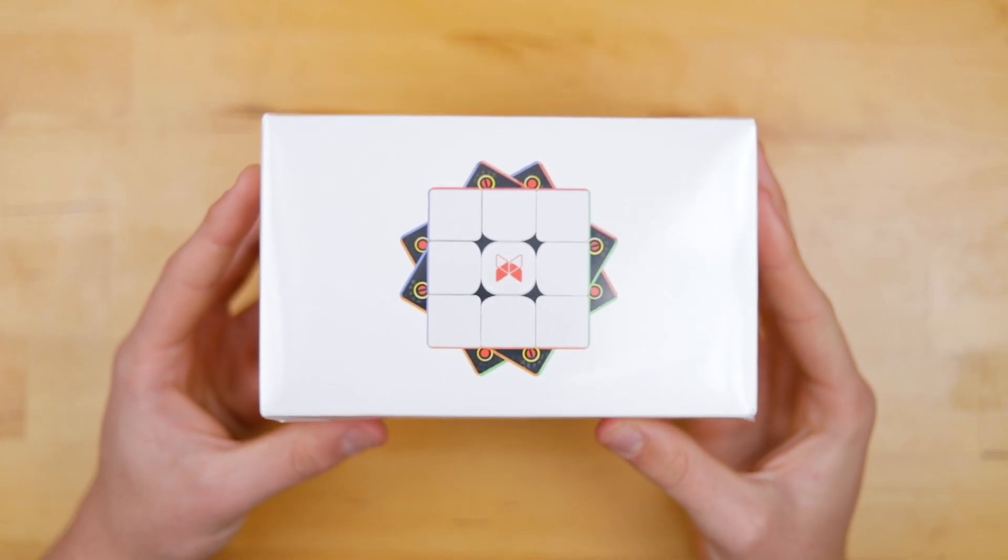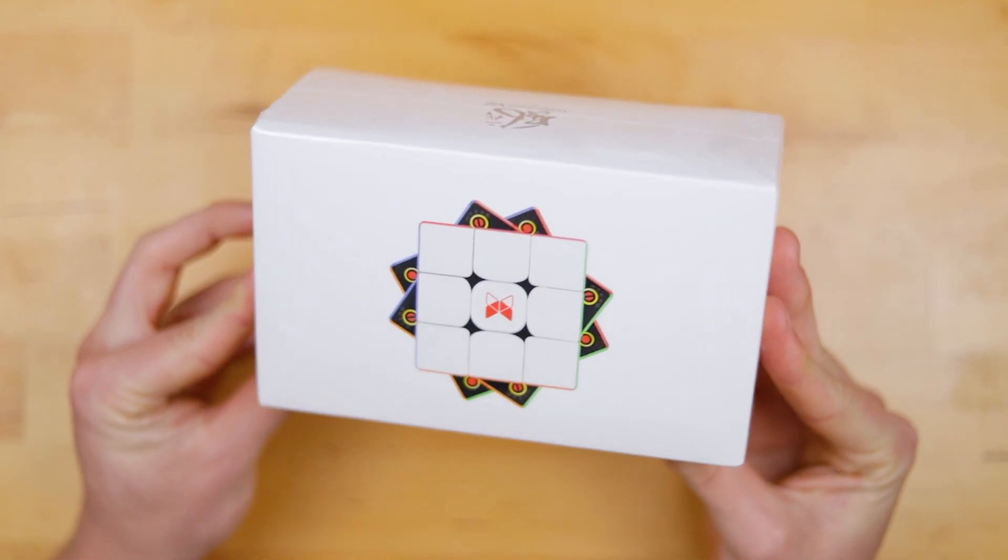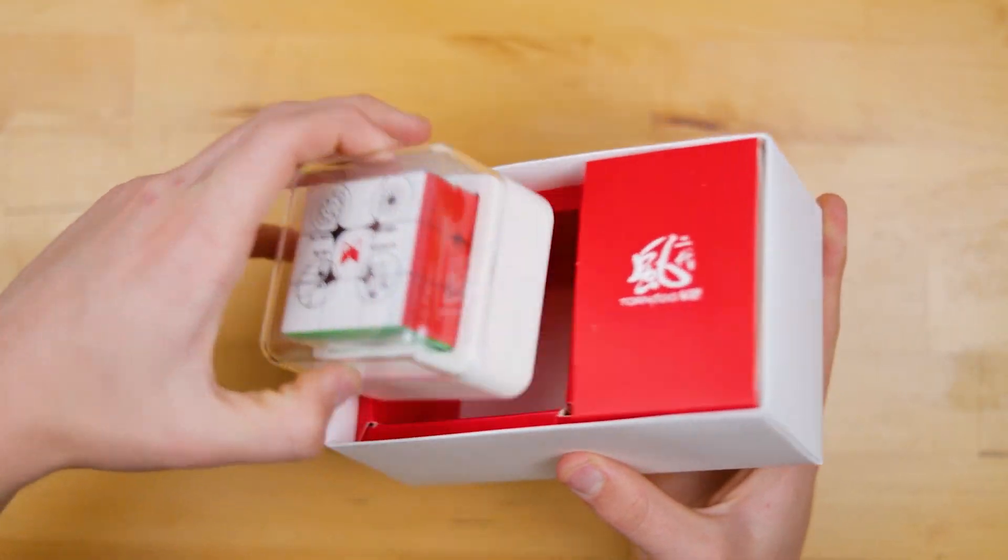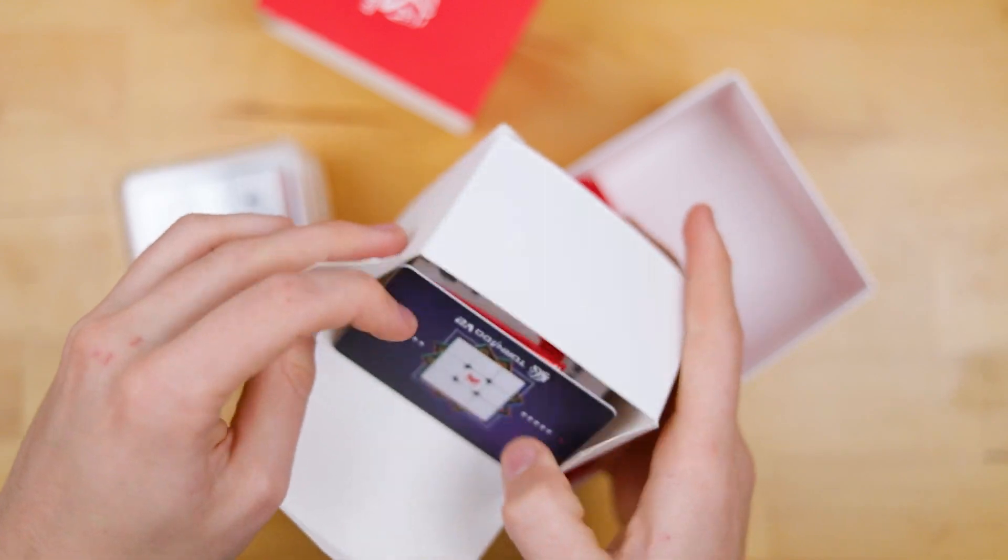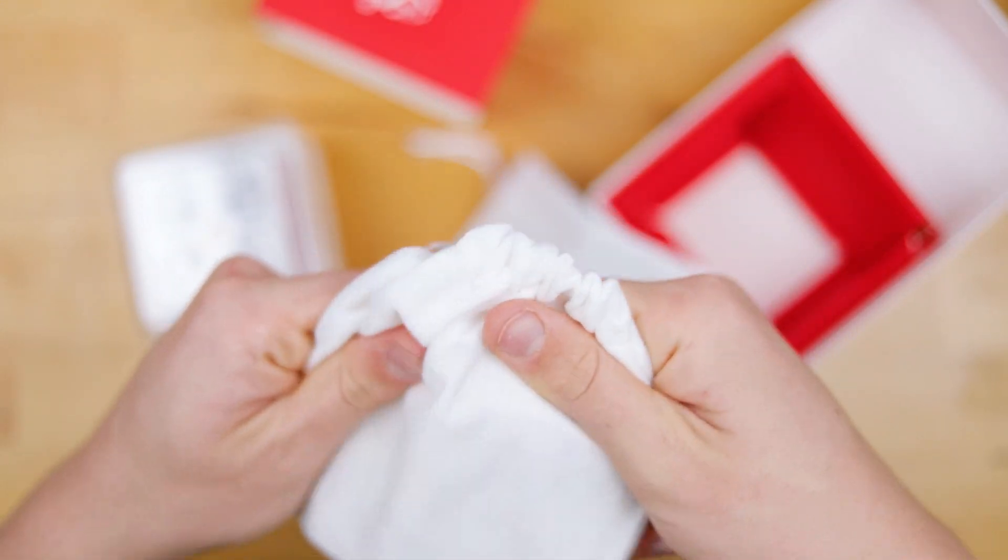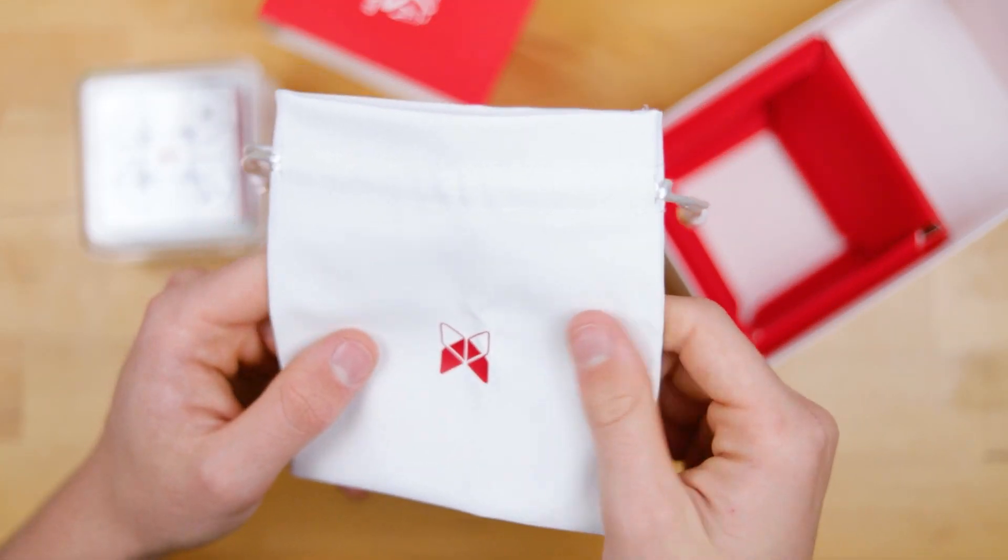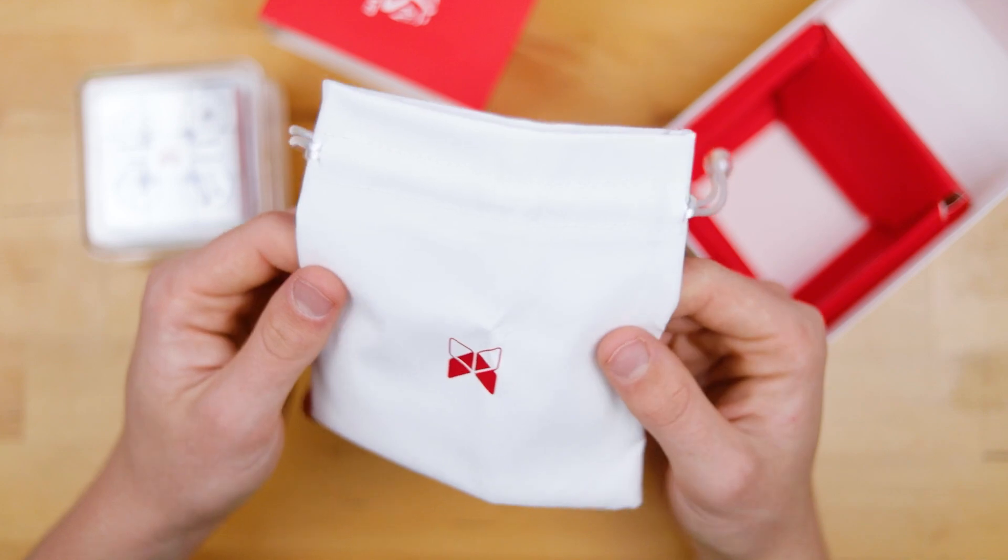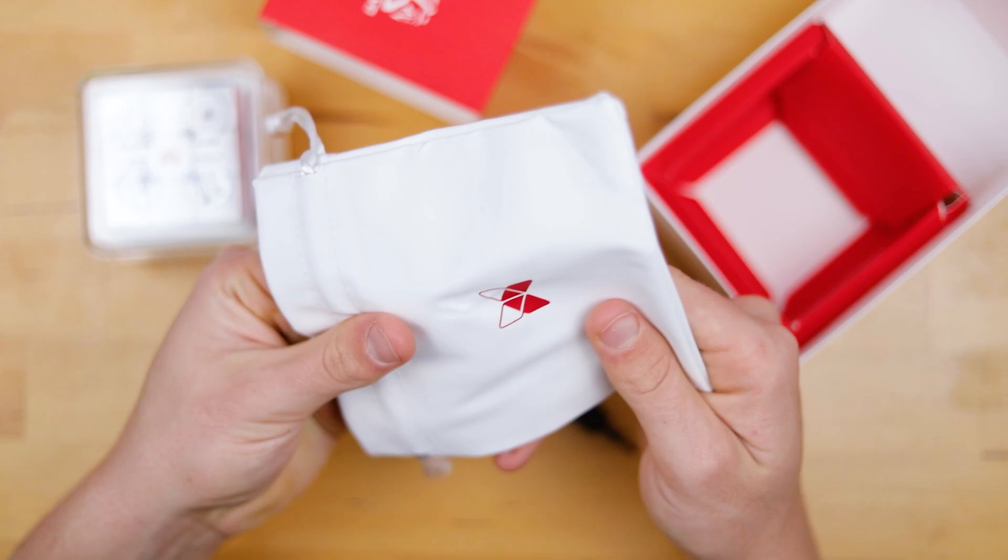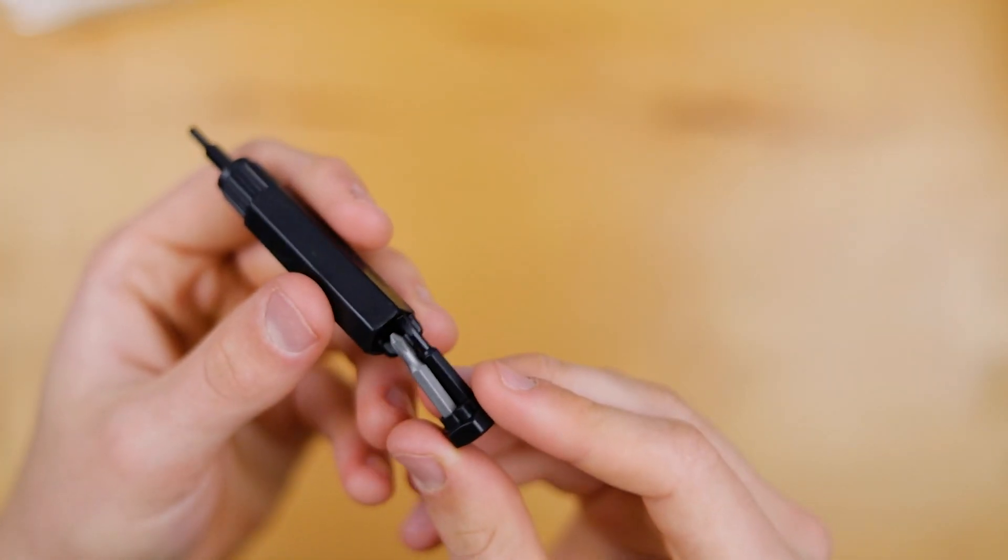And finally the most exciting thing today is the new QiYi X-Man Tornado V2M 3x3. Very nice QiYi with the red, I like that. This bag is so different. So pretty much every other cube bag like the Daily Puzzles ones or the GAN ones are some sort of fabric or felt. But this, it's some sort of synthetic or plastic material. I'm not quite sure but whatever it is, it's definitely water resistant if not waterproof. So actually that could be cool for your cube. Also I do like this little screwdriver which has some extra heads in it. That's really cool.